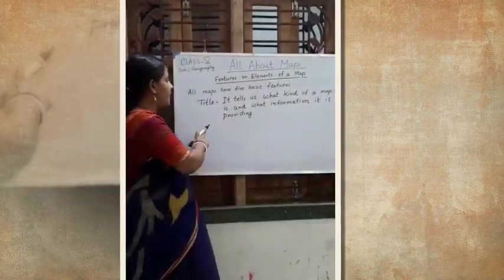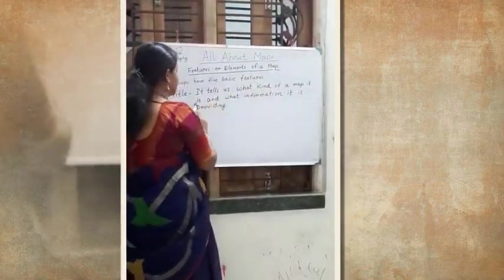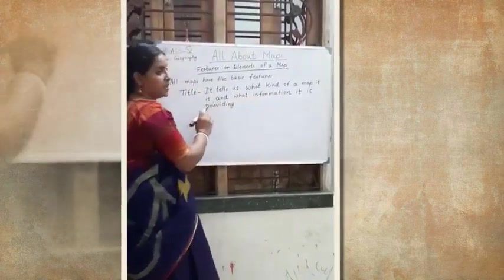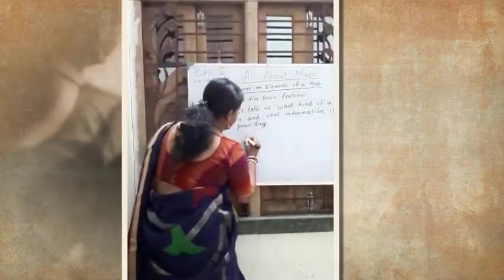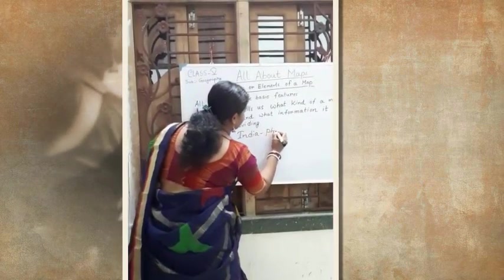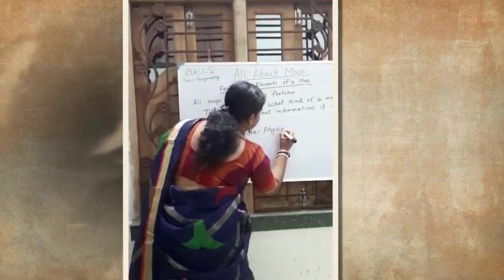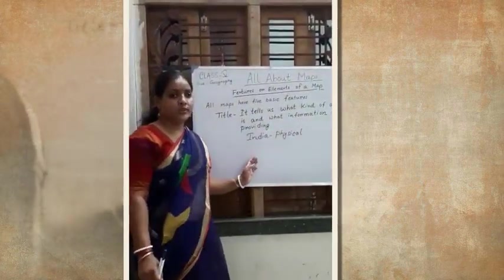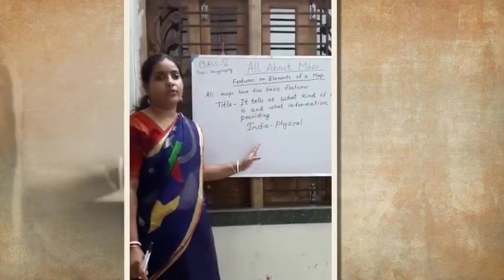What is the title of a map? The title of a map tells us what type of a map it is and what information it is providing. For example, if a title of a map says India Physical, that means the map which is shown is of India and it is showing the physical features of India.